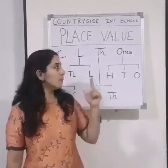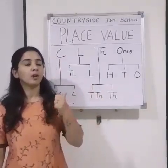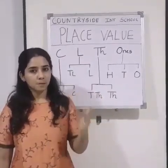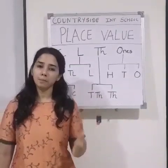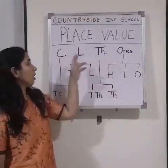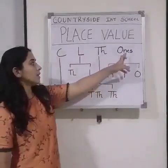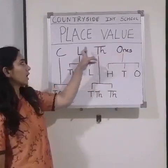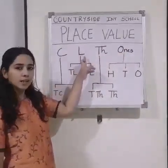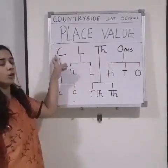First of all, we will see the place value table. Today I am going to discuss the place value chart, number name, expanded form, and successor and predecessor. Place value chart has periods: ones, thousands, lakh, and crore. Till lakh, we have already studied in class 4. Today we will study the new period, that is crore.